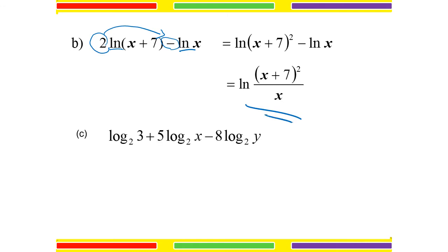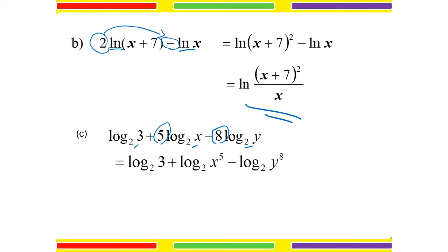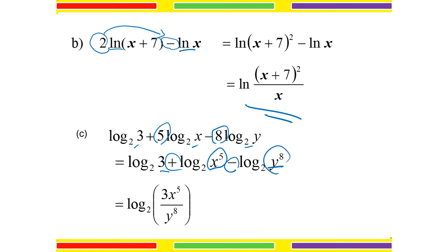For question C: log base 2 of 3 plus 5 log base 2 of X minus 8 log base 2 of Y. All have the same base, but we still have coefficients 5 and 8. Bring them as powers: log base 2 of 3 plus log base 2 of X to the power 5 minus log base 2 of Y to the power 8. Combining using log laws gives log base 2 of 3 times X to the power 5 divided by Y to the power 8.